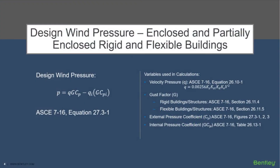Before we create our wind load definitions for the walls of our enclosed building structure, let's first take a look at the calculations that RAM Elements will perform to arrive at the design wind pressures. RAM Elements will calculate your design wind pressure according to the ASCE 7-16 equation 27.3-1. Through this process it will consider the velocity pressure, the gust factor, the external pressure coefficient, and the internal pressure coefficient. We do recommend that you have your ASCE 7-16 available as a reference when creating your wind definition to ensure that all of your variables are entered correctly.